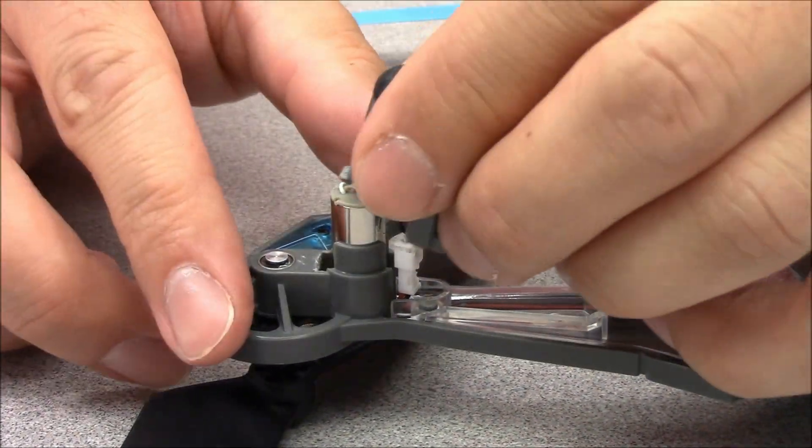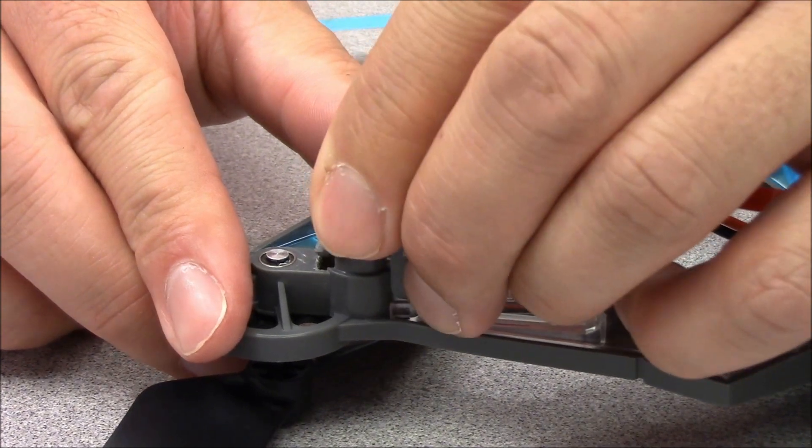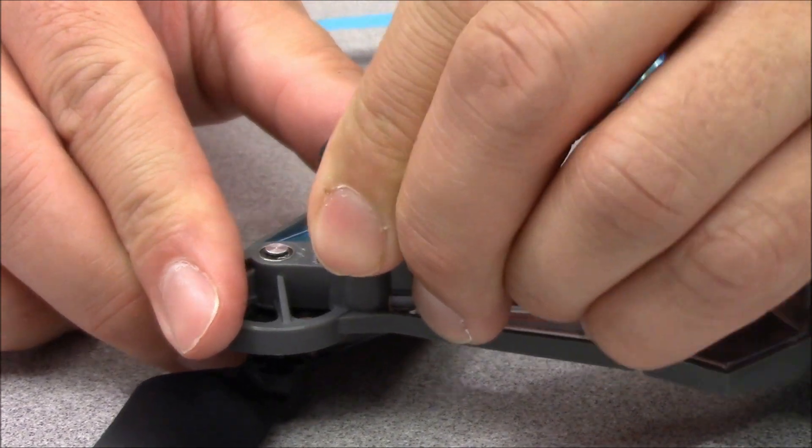Next, slide the motor cover onto the motor. You'll need to apply some pressure to the cover to get the locking tab to click back into place.